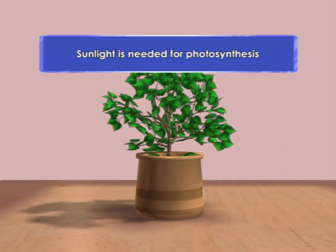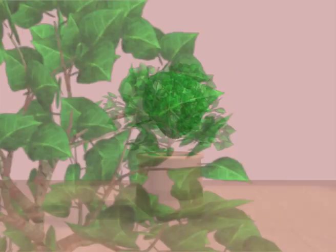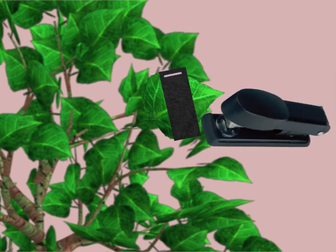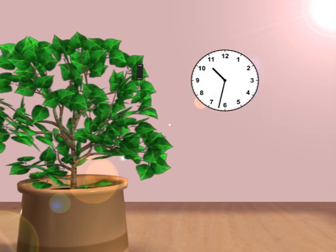Sunlight is needed for photosynthesis. This experiment shows that sunlight is needed for photosynthesis. A potted plant is covered with a box for two days to remove the starch in the leaves. Part of a leaf is covered with black paper to avoid exposure to sunlight. The green plant is then exposed to sunlight for two hours, and the leaf is tested for the presence of starch.